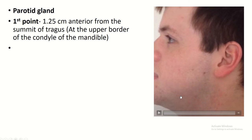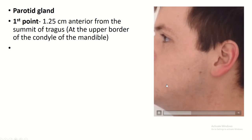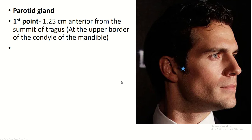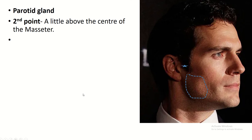How can you see the condyle of the mandible? If you depress the mandible, this is the condyle of the mandible. So the first point is 1.25 centimeters from the summit of the tragus. Then you must identify the masseter muscle — when clenching the teeth, contraction of the masseter muscle occurs — and the second point is just above the center of the contracted masseter muscle.